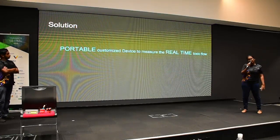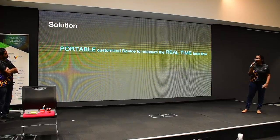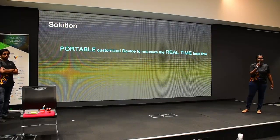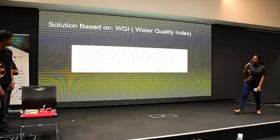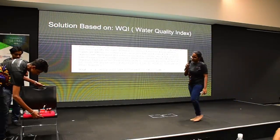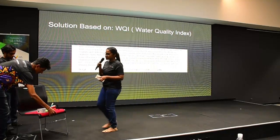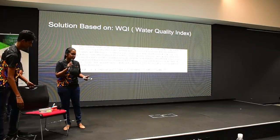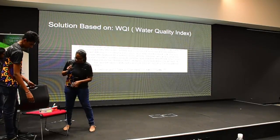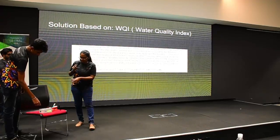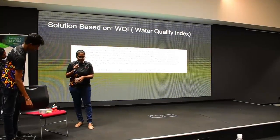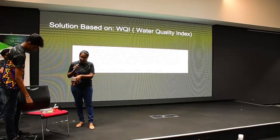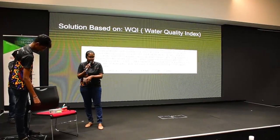We introduce our solution: a portable, customised device to measure real-time toxic flow of waterways. Now I will go to the demonstration. Here we have an IoT device which will be placed in waterways such as river banks — let's assume the Bolgadar river bank. The probes are measuring the pH value, the turbidity, and the water temperature, and are now introduced into the normal water of the Bolgadar lake.